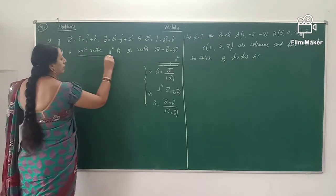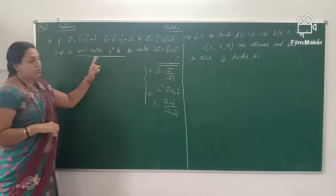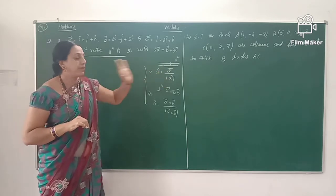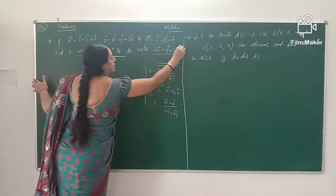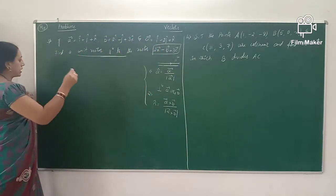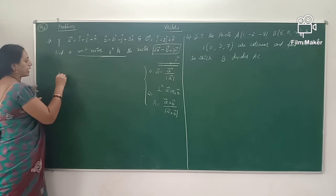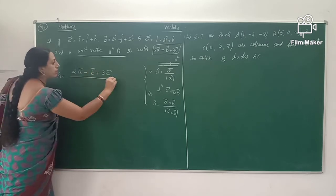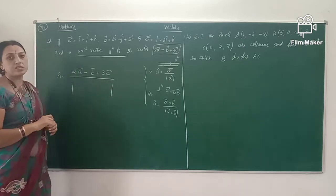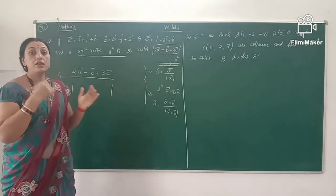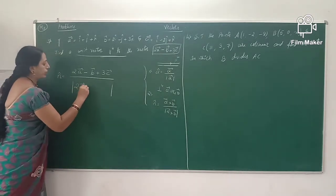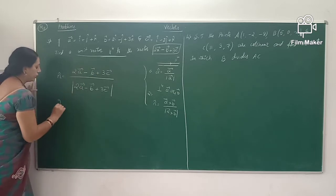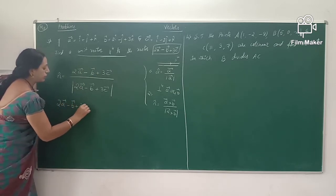By using the given condition, the unit vector parallel to the given vector uses the first formula. The unit vector parallel to vector A is vector A divided by magnitude of A. Here in place of A we have 2 times A minus B plus 3C. Therefore n-cap is defined by 2 times vector A minus vector B plus 3 times vector C, divided by the magnitude of 2 times A minus vector B plus 3 times vector C.